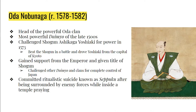After gaining the support of the emperor, Nobunaga continued to challenge the other Daimyo and clans for supreme control of Japan. His life ended with a ritualistic suicide known as seppuku. He was surrounded by enemy forces inside a temple and, rather than be taken hostage, he committed seppuku.